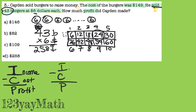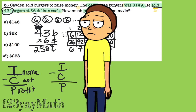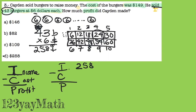One of the common mistakes is that kids choose $258 as their answer. But is this the answer? No! This is only the income. You need to subtract the cost. How do we find the cost? That is easy because the cost is $149. So minus the cost and we will find our profit.